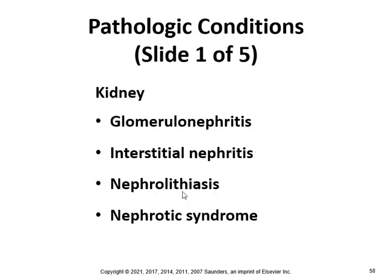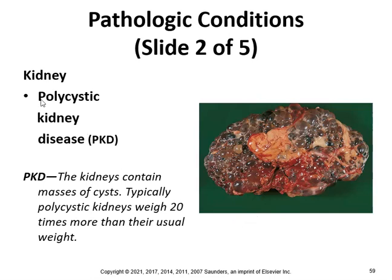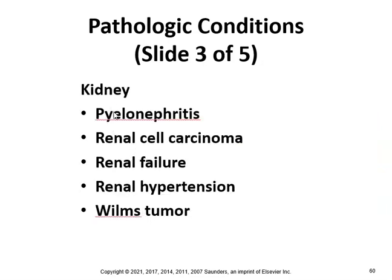Now let's look at pathological conditions. Glomerulonephritis, interstitial nephritis, nephrolithiasis, and nephrotic syndrome are examples. Polycystic kidney disease (PKD) involves kidneys containing masses of cysts — polycystic kidneys typically weigh 20 times more than usual and are usually a hereditary condition.